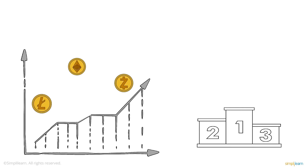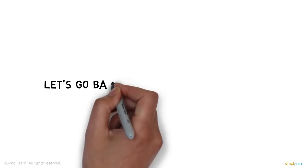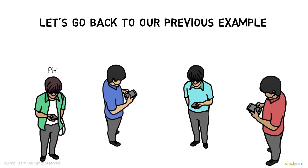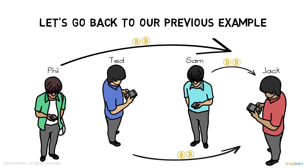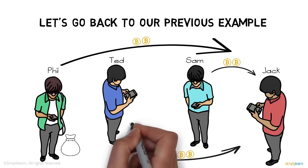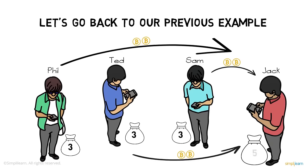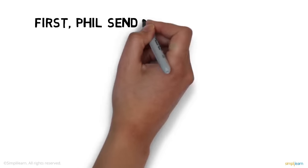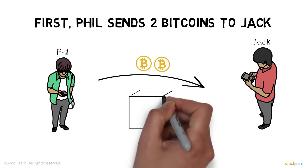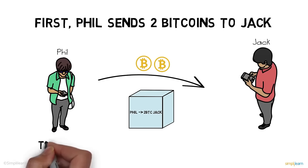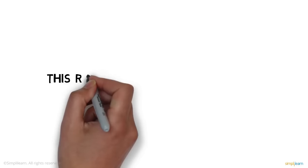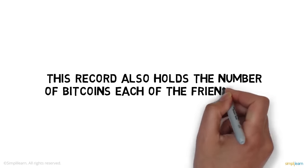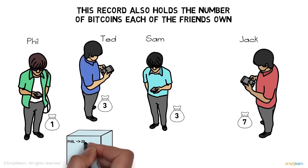In a market of more than thousands of cryptocurrencies like Litecoin, Ethereum, and Zcash, one reigns supreme — Bitcoin. In our example, Phil, Ted, and Sam each send Jack two bitcoins. Let's assume they each have three bitcoins while Jack has five. When Phil sends two bitcoins to Jack, a record is created in the form of a block, permanently inscribed with the transaction details. After Phil's transaction, Jack has seven bitcoins while Phil has one.